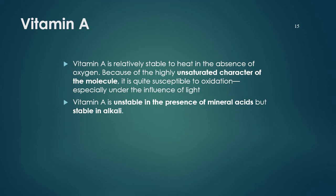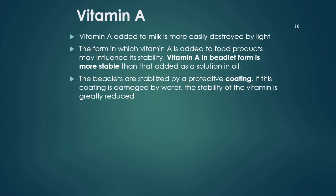Vitamin A is relatively stable to heat in the absence of oxygen, but because of the highly unsaturated character of the molecule, it is quite susceptible to oxidation, especially under the influence of light. Vitamin A is also unstable in the presence of mineral acids but stable in alkali. Vitamin A that is added to milk is more easily destroyed by light, and the form in which vitamin A is added to the food product may influence its stability.